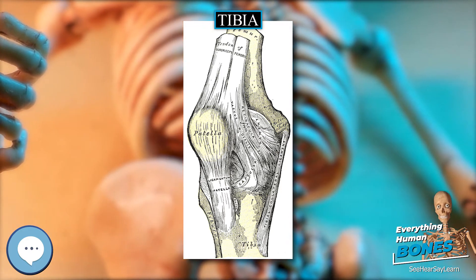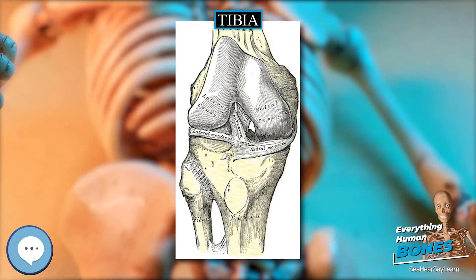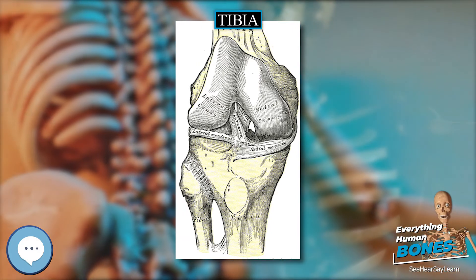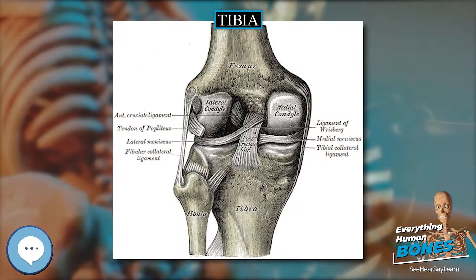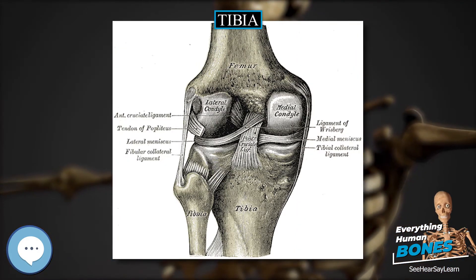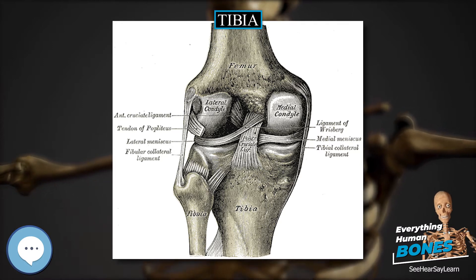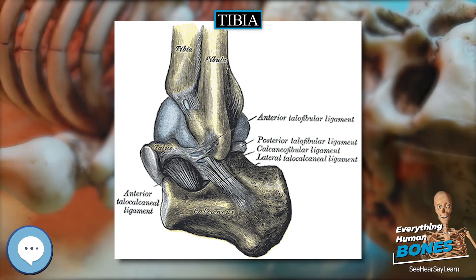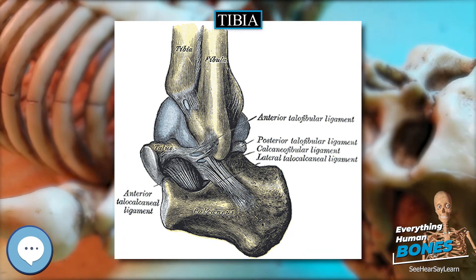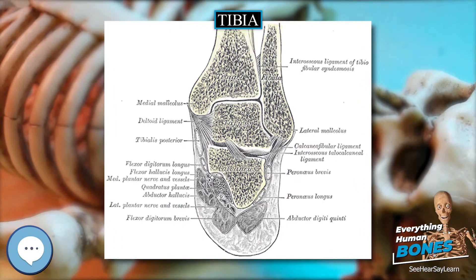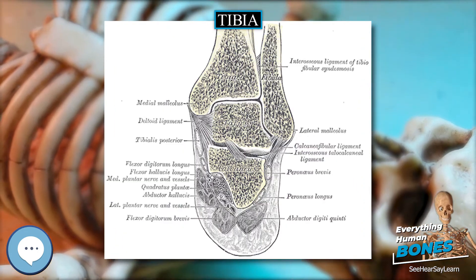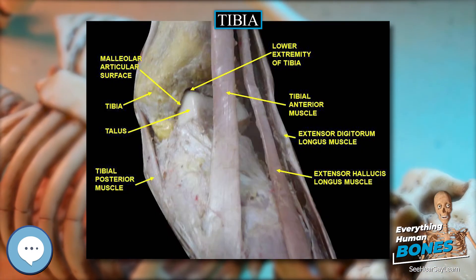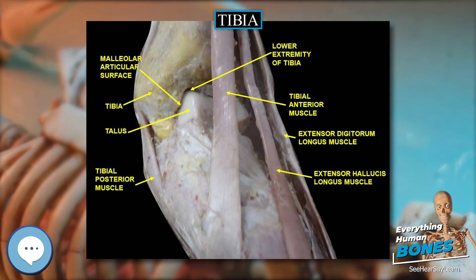The medial border is smooth and rounded above and below, but more prominent in the center. It begins at the back part of the medial condyle, and ends at the posterior border of the medial malleolus. Its upper part gives attachment to the tibial collateral ligament of the knee joint to the extent of about five centimeters, and insertion to some fibers of the popliteus muscle.